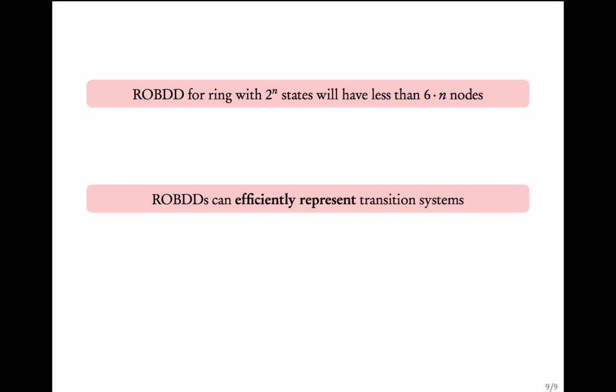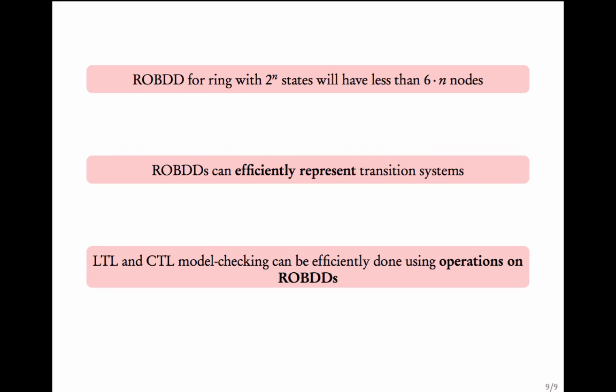In practice for huge transition systems there are automatic ways of synthesizing ROBDDs, and in practice these ROBDDs efficiently represent transition systems in most cases. Moreover, LTL and CTL model checking can be efficiently done using ROBDDs. Once you have the transition system as an ROBDD, you can apply CTL and LTL model checking methods. You can refer to the book Logic in Computer Science by Huth and Ryan. So ROBDDs are one way of tackling the state-space explosion problem.